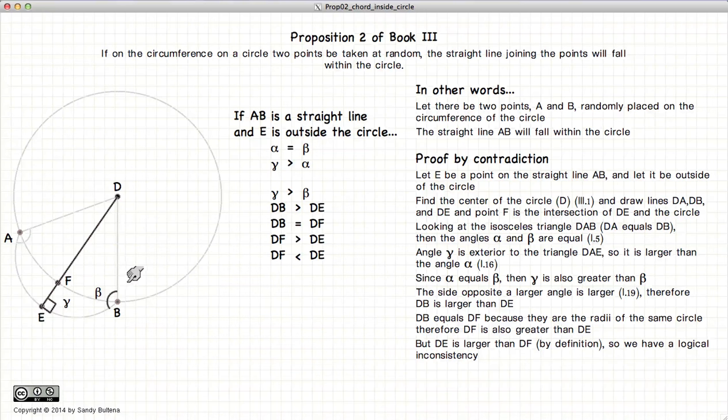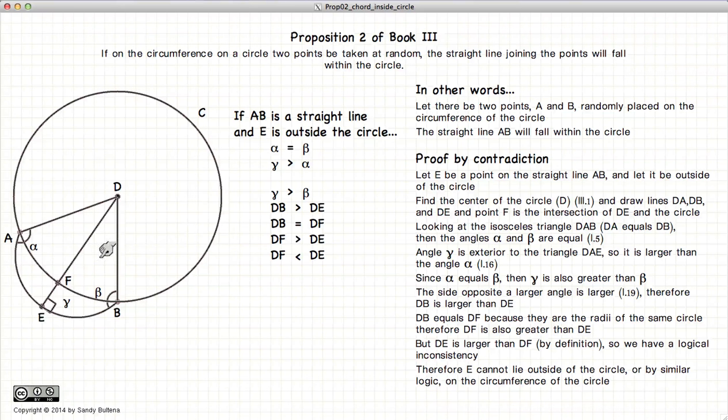So here is our logical inconsistency that we were looking for. By the same token, we can use the same arguments to show that E cannot lie on the circumference of the circle. So we have shown that it cannot be outside the circle, nor can it be on the circle.